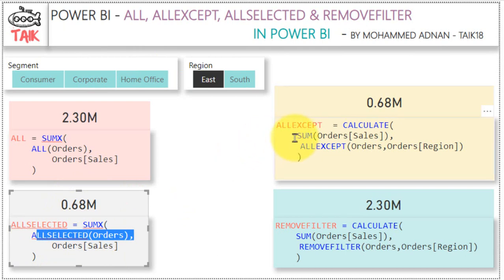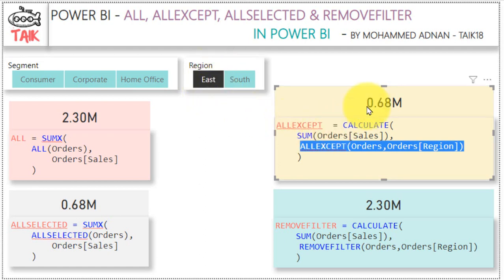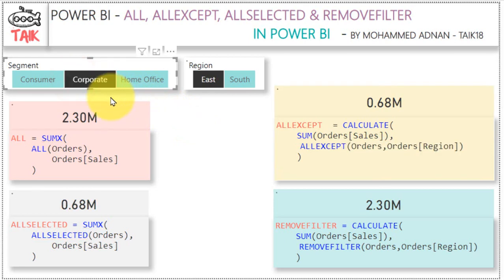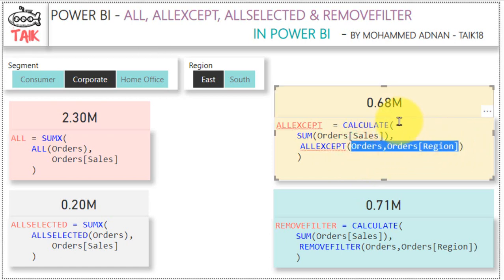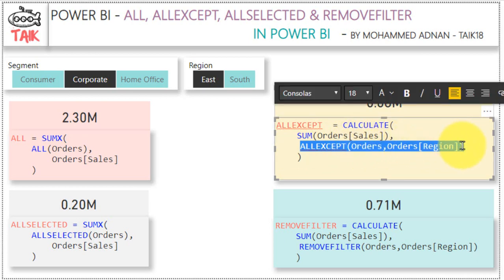Now looking at ALLEXCEPT — here the formula is ALLEXCEPT(Orders, Orders[Region]). What this means is: whatever filter has been applied to this table, except for the Region column, it will show all values. I am applying East in the Region filter and it has filtered the value. But if I apply a filter on Segment and select Corporate, the value has not been filtered here. Because only filters on the Region column will affect this measure — filters on Segment or other columns are removed. That is what ALLEXCEPT means: except the Region column, whatever filters are applied to other columns are ignored.